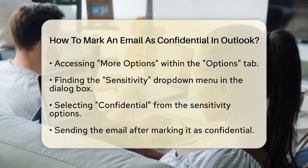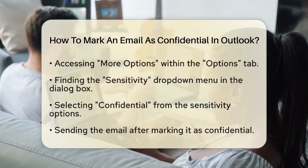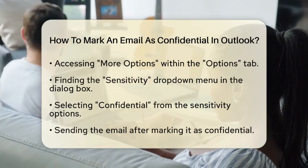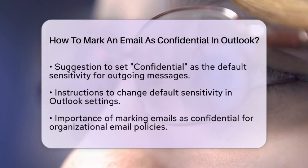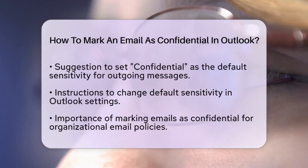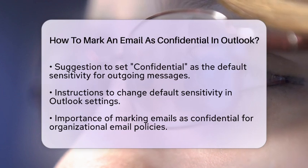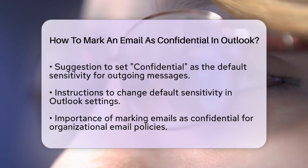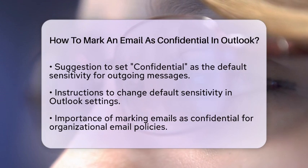If you frequently send confidential emails, consider setting Confidential as the default sensitivity level for all outgoing messages. To do this, go to File and then Options in the main Outlook window. From there, select Mail from the left-hand menu. Scroll down to the Send Messages section, locate the Default Sensitivity dropdown, change this setting to Confidential, and click OK to save your changes.